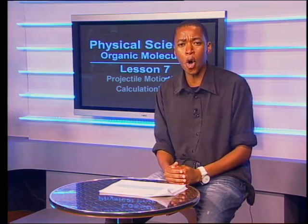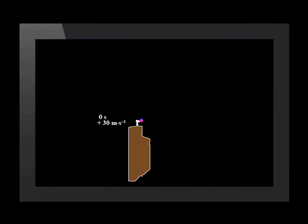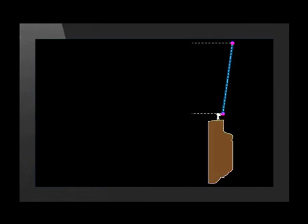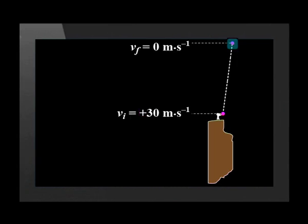Our next question is about a ball thrown upward from the top of a cliff at 30 meters per second. We calculate the maximum height the ball reaches above the hand. We choose the interval from when the ball leaves the hand to the top of its motion. The initial velocity is 30 meters per second upward, and the final velocity at the highest point is 0 meters per second. The ball is in free fall, so acceleration is 9.8 meters per second squared downward.